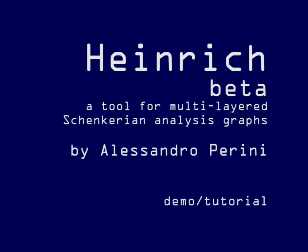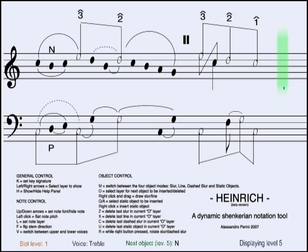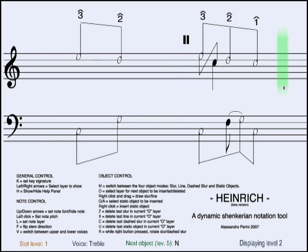Welcome to the Heinrich beta tutorial. Heinrich is a prototype for an educational tool that allows drawing Schenkerian analysis graphs. Heinrich lets you assign different layers to notes and objects in order to express the multilevel structure of the Schenkerian analysis method.